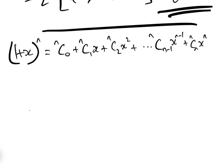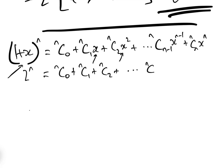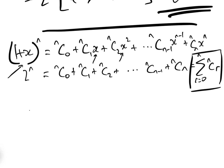For the first formula, if we put X equals one, we get two to the N equals NC0 plus NC1 plus NC2 plus ... plus NC(N-1) plus NCN, which equals the sum between R equals zero and N of NCR. So we've proved the sum of NCR equals two to the N.